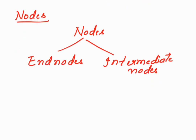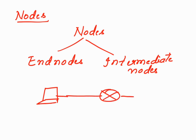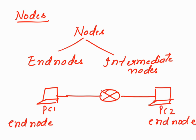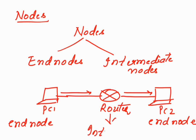In a network topology, consider a simple setup: if there is a PC in one network sending a packet to another host in another network, these two devices — PC1 and PC2 — are called end nodes. The device connecting these two networks and forwarding data from PC1 to PC2 is called an intermediate node.